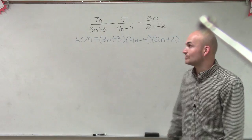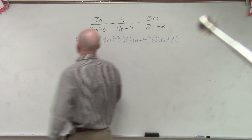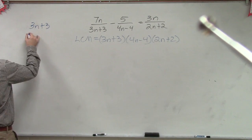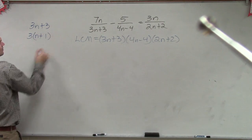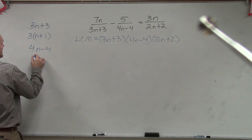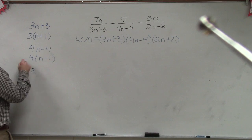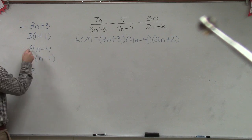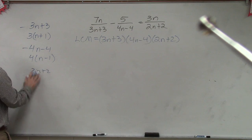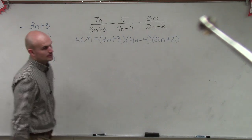So what I like to do, ladies and gentlemen, whenever we have a binomial trinomial, let's see if we can factor them out. So let's do 3n plus 3. Well, that factors to 3 times n plus 1. What about 4 times n minus 4? That factors to 4 times n minus 1. And what about 2n plus 2? Well, that factors out to 2 times n plus 1.